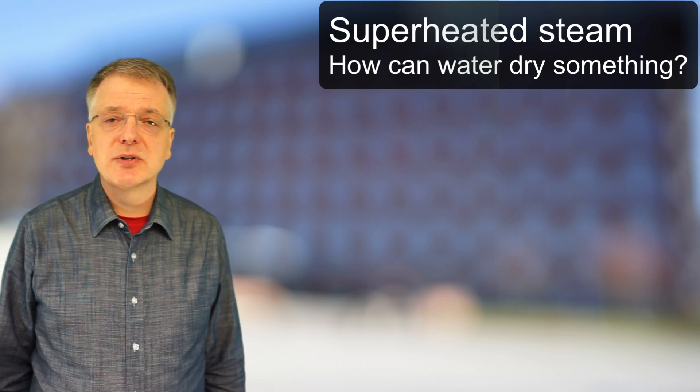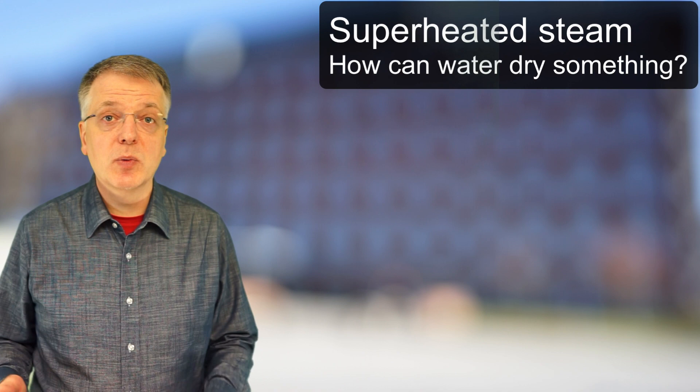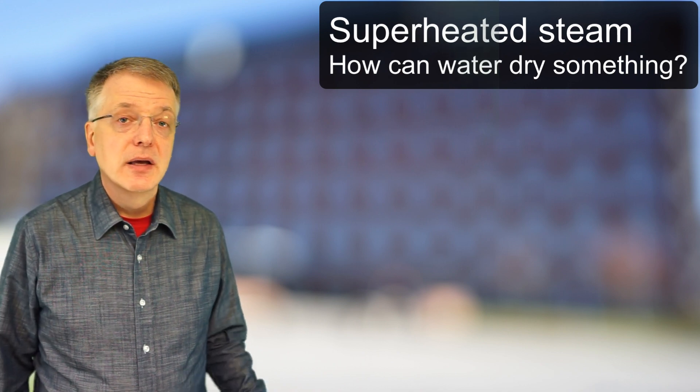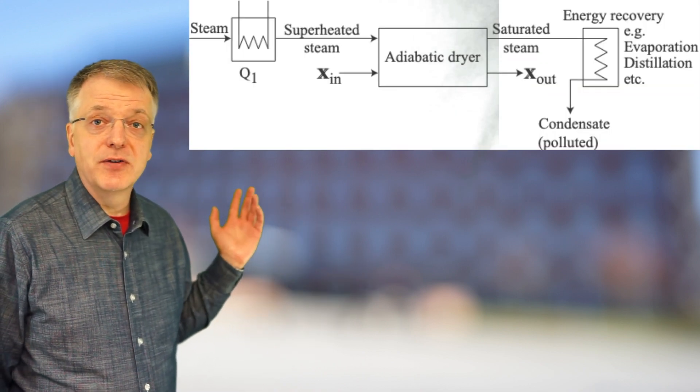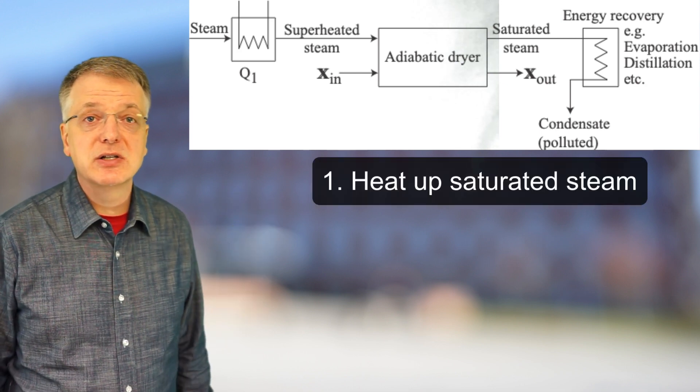Drying with superheated steam might sound like an impossible task. How can you remove water by adding more water? In drying with superheated steam, steam is first superheated, that is, heated to a temperature above its condensation temperature.